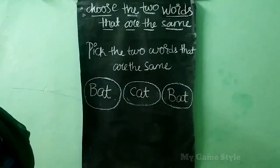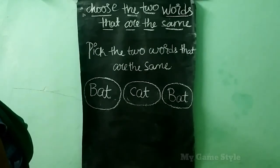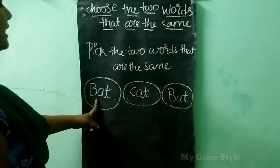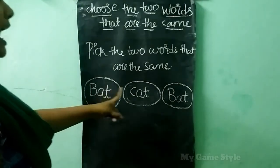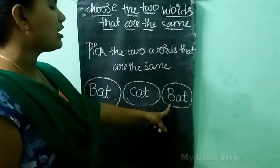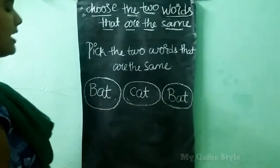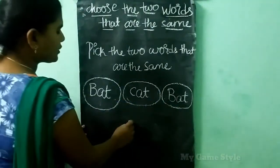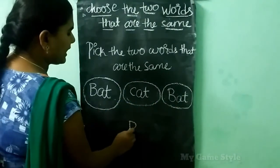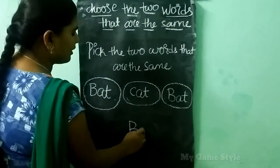Which word are the same, children? Here, it is Bat. And this is also Bat. Bat word is same. So Bat is the correct answer.